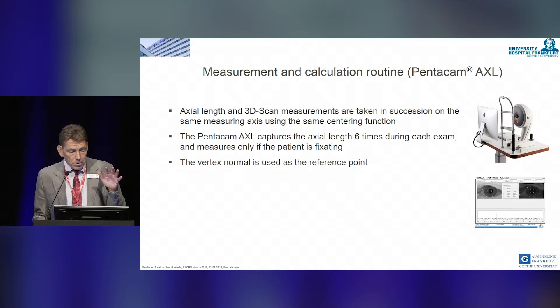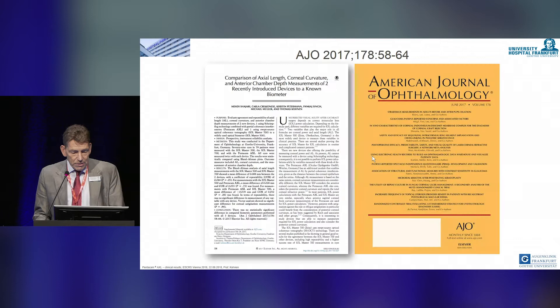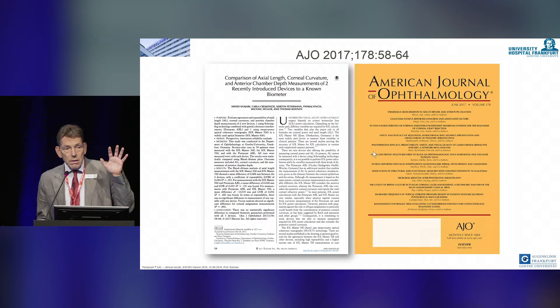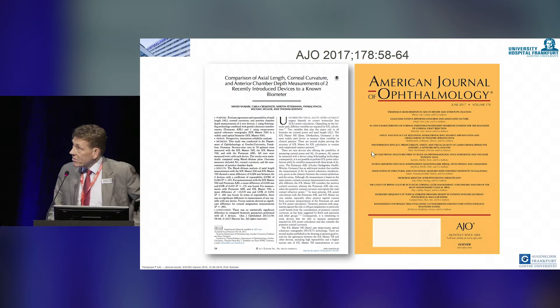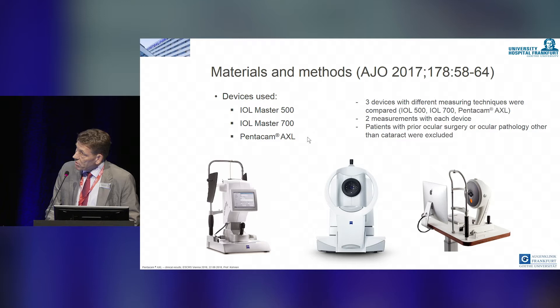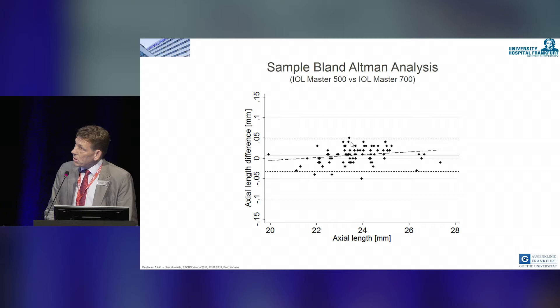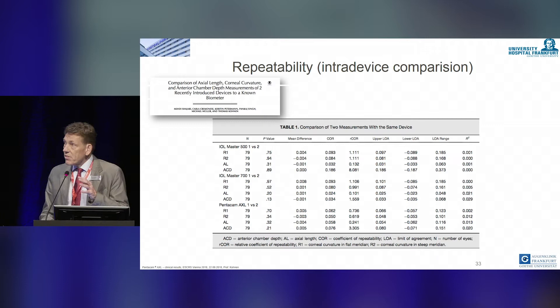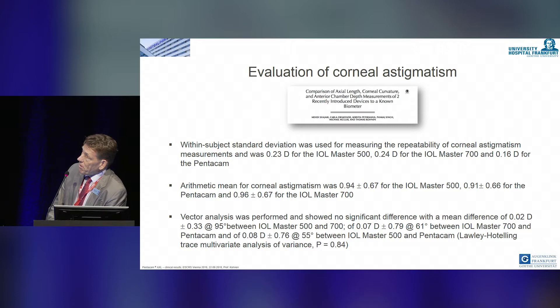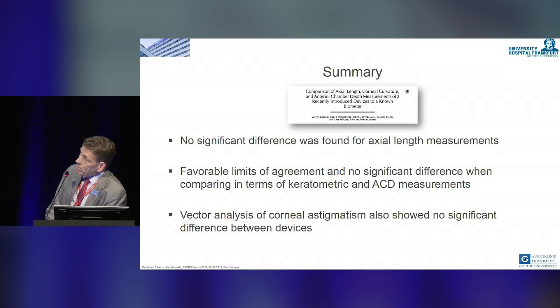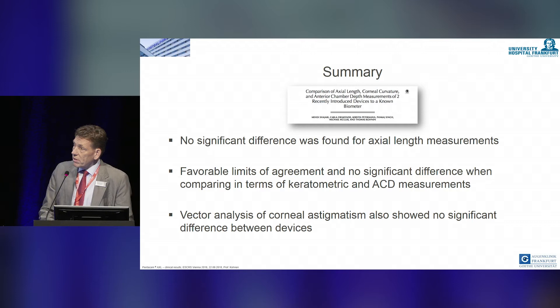We published a paper in AJO looking at the difference between IOL Master 500, IOL Master 700, and the Pentacam AXL, doing these axial length measurements. In this prospective case series of 79 eyes, we did a Bland-Altman analysis. We found no significant difference for axial length measurement, favorable limits of agreement, and no significant difference comparing keratometry and ACD measurements. The vector analysis of corneal astigmatism also showed no significant difference between these devices.